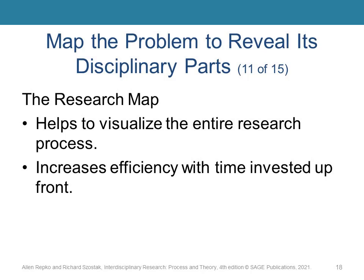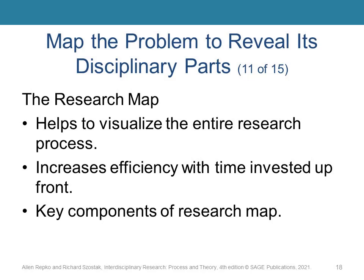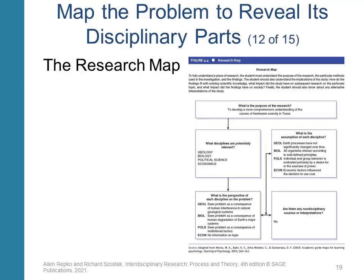Like the System Map, the Research Map helps us identify the various components of the problem and then identify the relevant disciplines. Let's take a look at the key components of a research map by looking at the textbook's example.